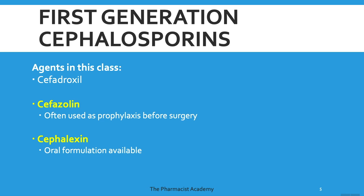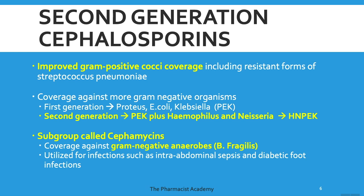The second-generation cephalosporins have improved gram-positive cocci coverage because they cover more resistant forms of these gram-positive bacteria. Coverage for gram-negative organisms also improves. The first generation covers Proteus, E. coli, and Klebsiella — sometimes referred to simply as PEC. The second-generation cephalosporins not only cover PEC but also cover Haemophilus and Neisseria, which are all gram-negative bacteria.